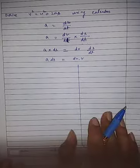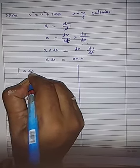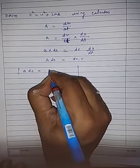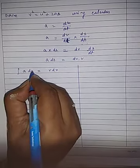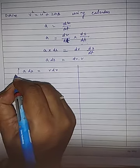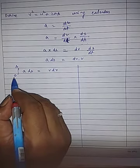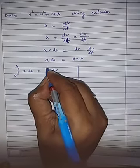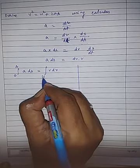If I integrate, ∫a ds = ∫v dv. And ds is changing from 0 to s—initially the displacement was 0 and after time t seconds displacement is s. And here initially your velocity is u when time t = 0, and after time t seconds velocity becomes v.